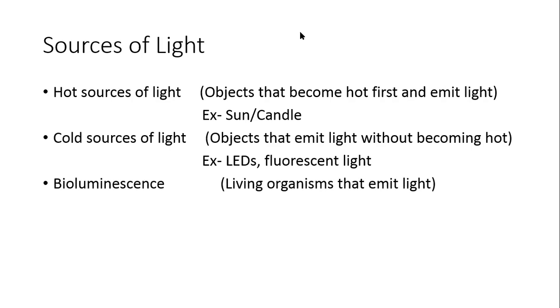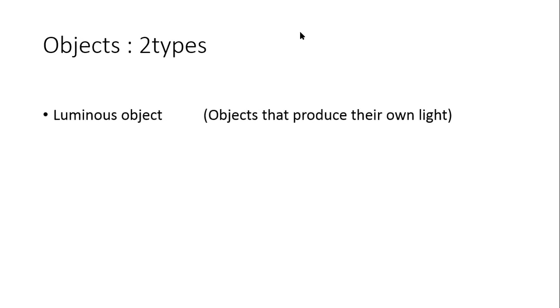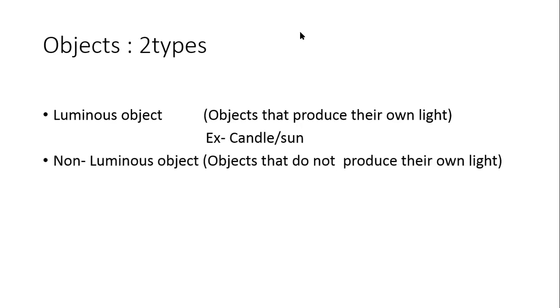And the last one is bioluminescence — living organisms that emit light. Examples are fireflies and glow worms. Now, objects are of two types. Luminous objects are objects that produce their own light, for example candle and sun. Non-luminous objects do not produce their own light, for example a table and chair.